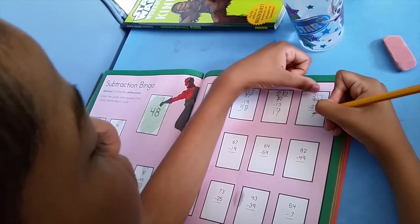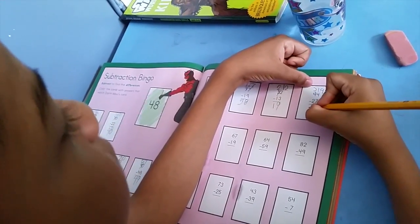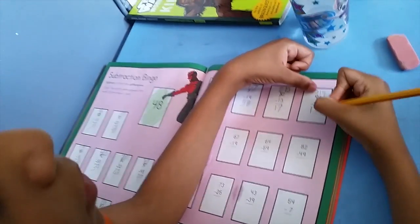3. 3 minus 2 equals 1. Beautiful. Break time, break time!